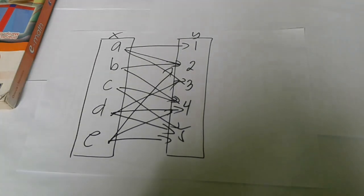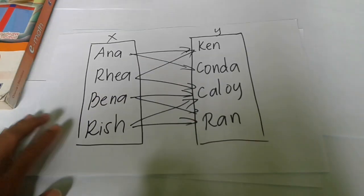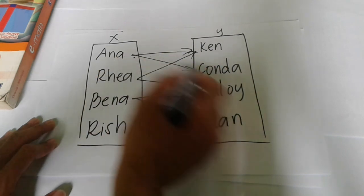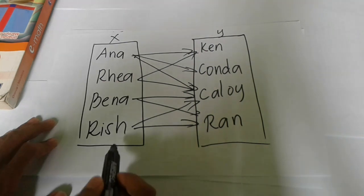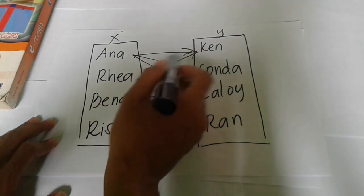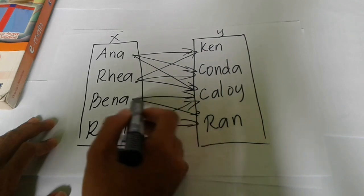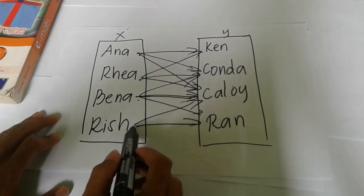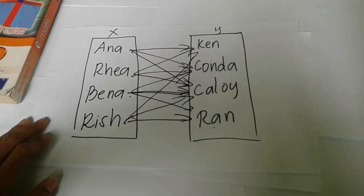Going back to the real-life people example for many-to-many: Ana is with Ken and Onda, Reya is with Ken and Onda, Bena is with Onda, Ryan is with Onda, and Rish is with Ryan, Kaloy, and Ken. That's a many-to-many relation.